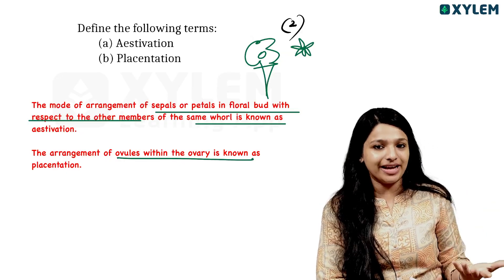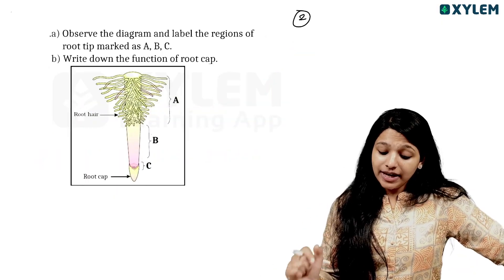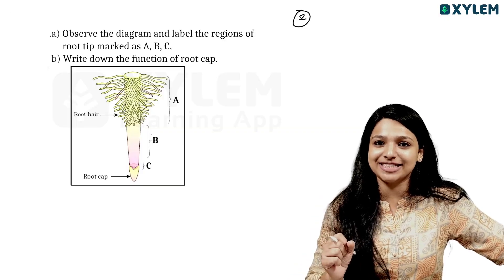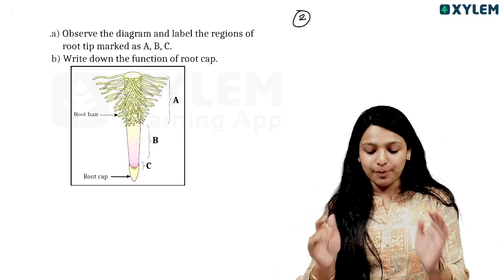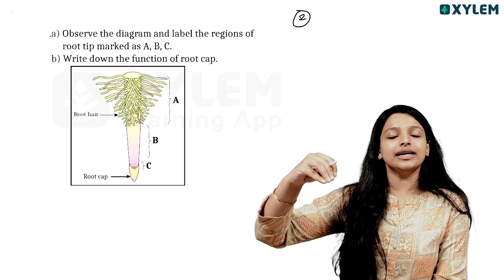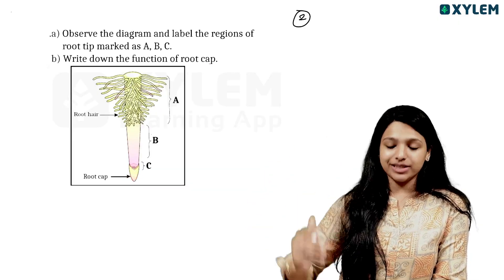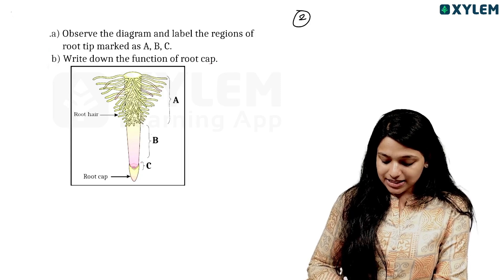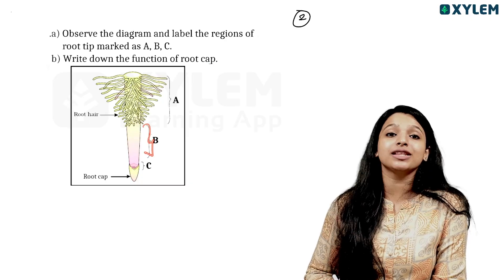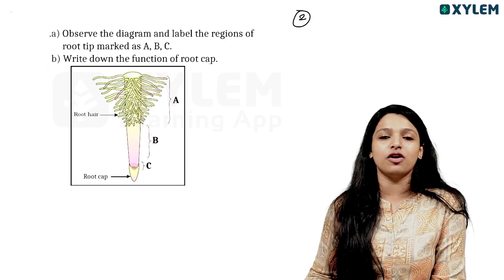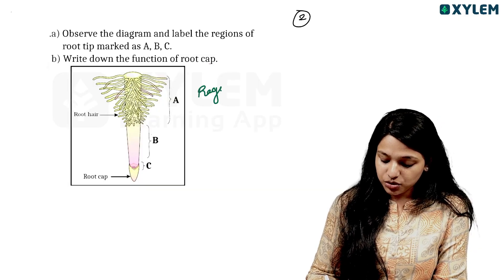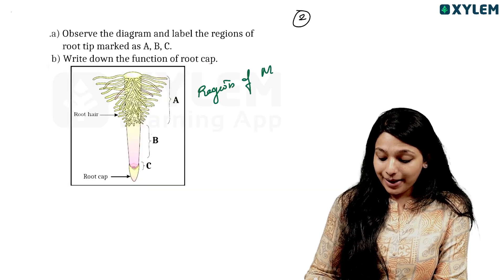Next question: Observe the diagram and label the regions of the root tip marked as A, B, and C. Starting from the tip: the bottom-most region is the Root Cap, which protects the root apex. Region A is the Region of Meristematic Activity. Region B is the Region of Elongation. Region C is the Region of Maturation.